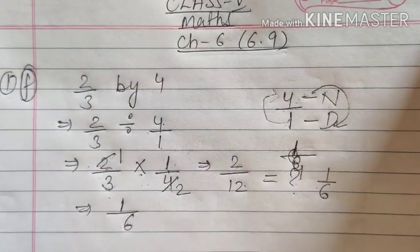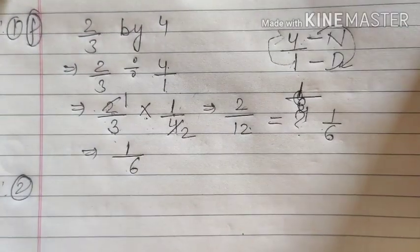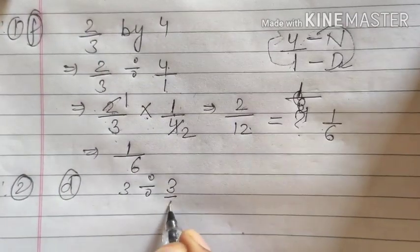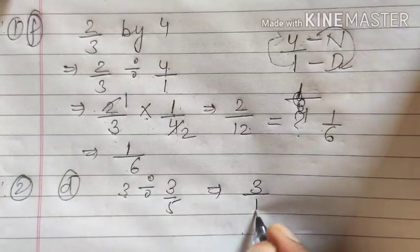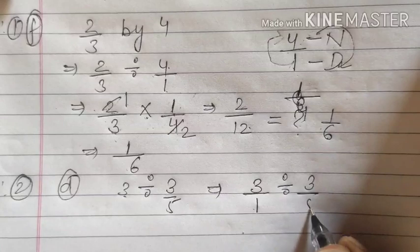Now, in question number 2, some numbers are there where we are not having denominator. Suppose, D part: 3 divided by 3 by 5. So what will you do? Here you don't have denominator. So put 1. Whenever we will not have denominator, we will put 1.